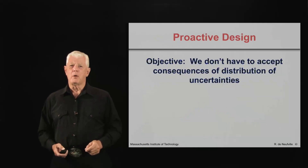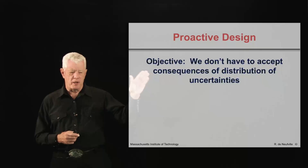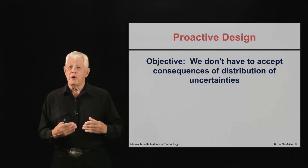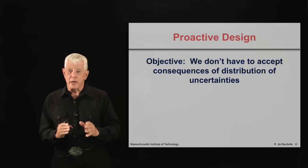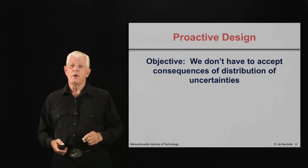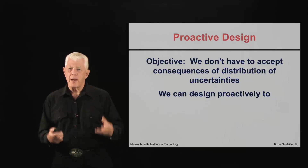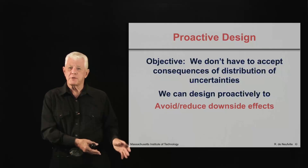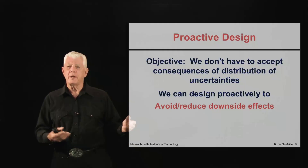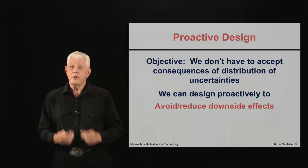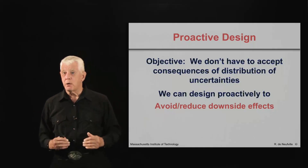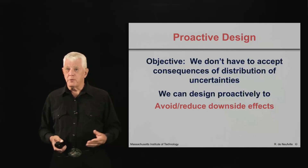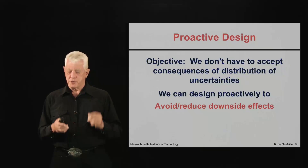So what do we do about it? What we want to do is have a proactive design. The objective is that we don't have to accept the distribution that may come from the base case design. We can ask: what can we do to improve the design? What we can do proactively, first of all, is to reduce the downside risks. One way to do it — not the only way — is to build the system smaller, so if it's not succeeding, you lose less. But there are other ways to think about reducing the downside.